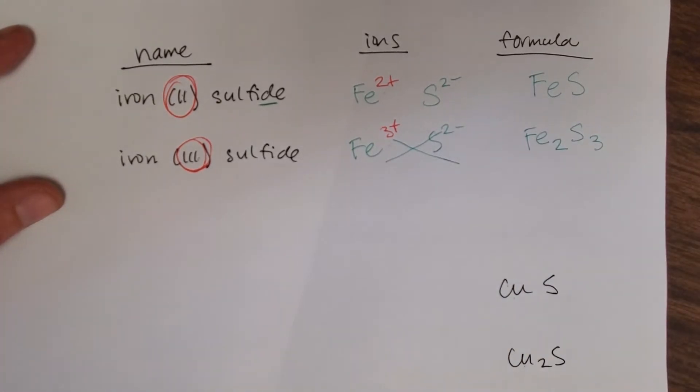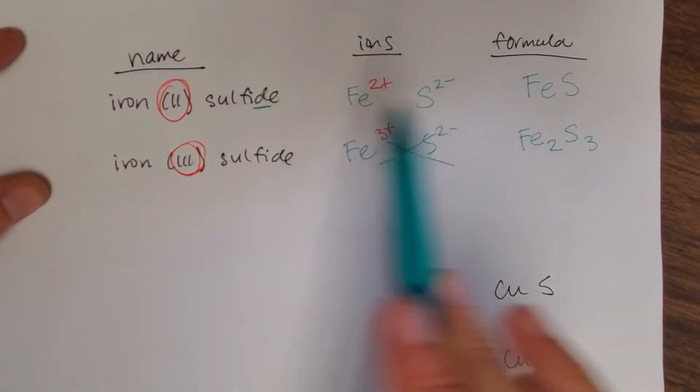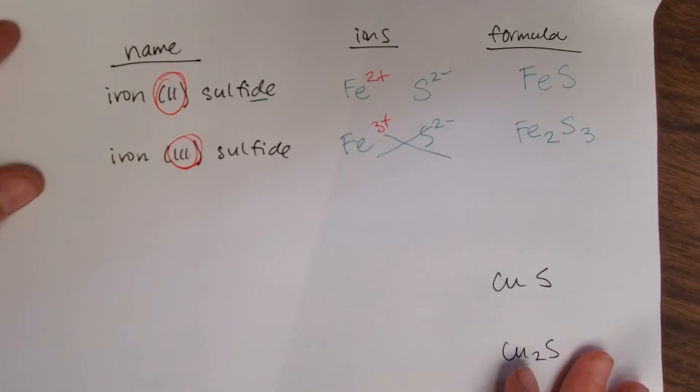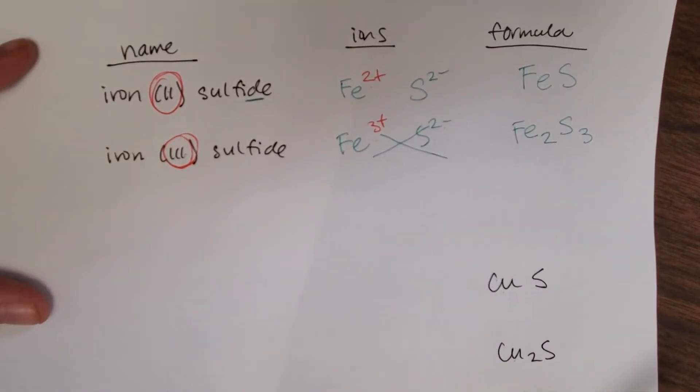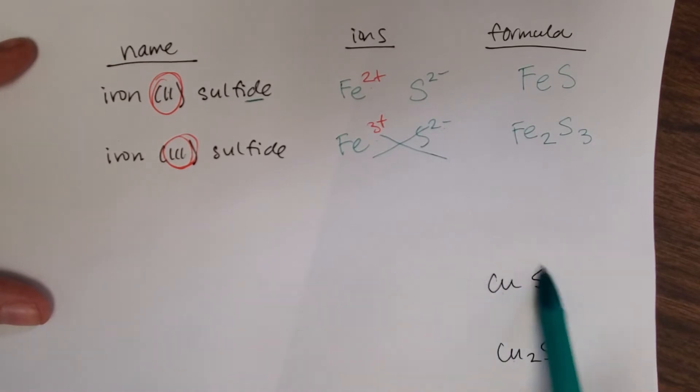Now if we go in reverse, if we go from the formula to the name, this is a little bit harder, but it's crucial. You have enough information here, it's just a bit of a puzzle going to the ions. Start with what we know.